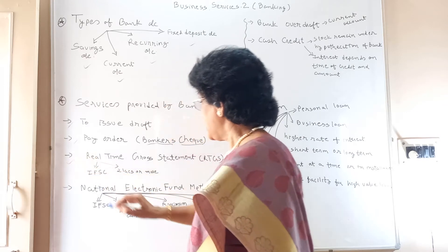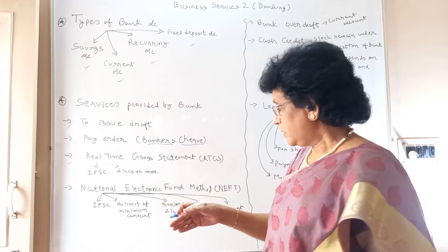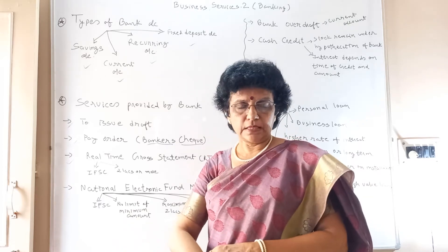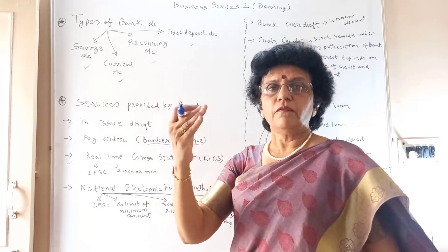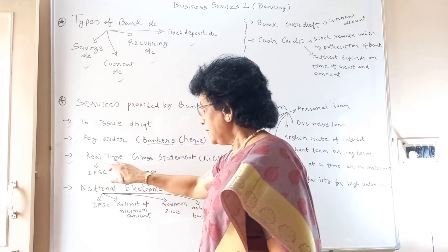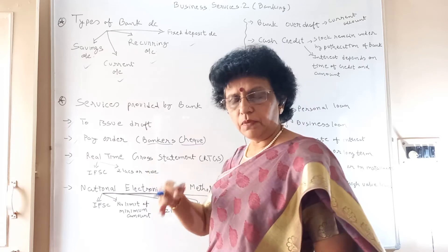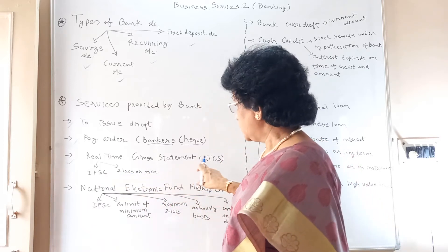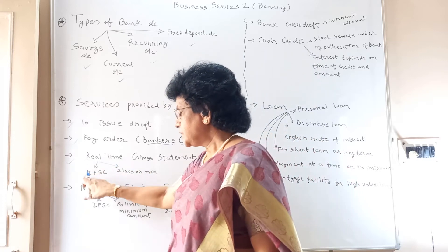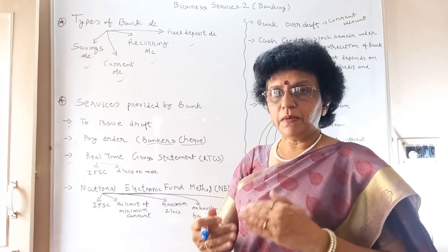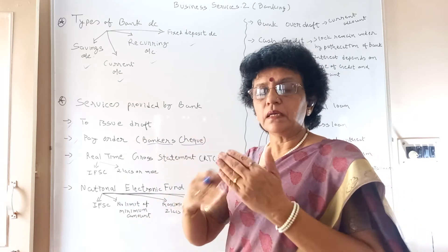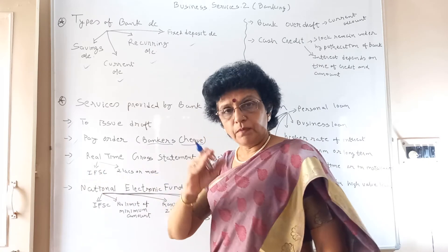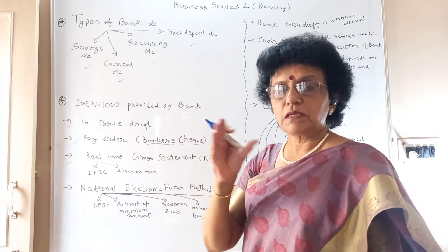Next is Real Time Gross Settlement — RTGS. Nowadays you have heard a lot about RTGS and NEFT because most payments are done through e-payment. We are now hardly writing checks. Physical paperwork is reduced. For RTGS, the limit is 2 lakhs or more. To do RTGS, you need the IFSC code of both the sender's bank and the receiver's bank, since this is an electronic transfer. RTGS is done with the help of the IFSC code, which is an 11-digit bank identification code.